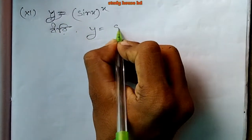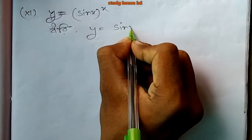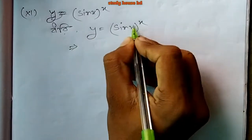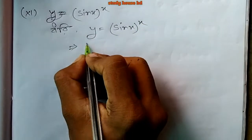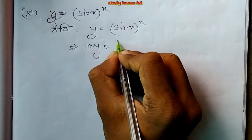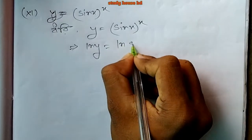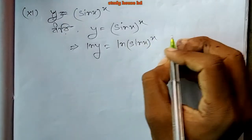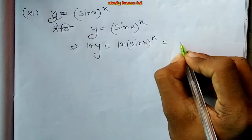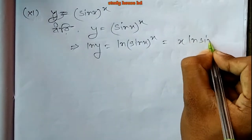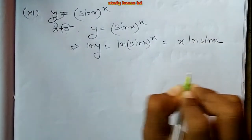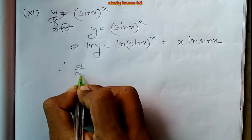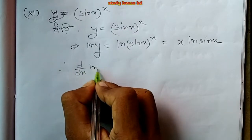Third problem: y equals sin(x) to the power x. Taking ln of both sides: ln y equals ln of sin(x) to the power x, which equals x times ln sin x. Now differentiating d/dx of ln y.